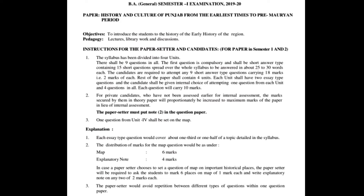Second, the distribution of marks for the map question would be as follows: Map — 6 marks, Explanatory note — 4 marks. In case a paper setter chooses to set a question on important historical places, the paper setter will be required to ask students to mark 6 places on the map at one mark each, and write an explanatory note on any two, at two marks each.